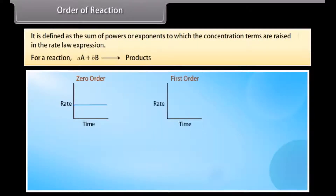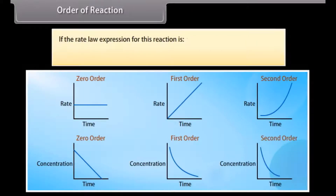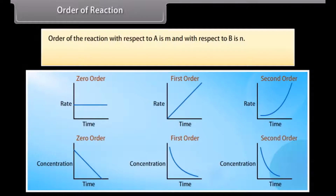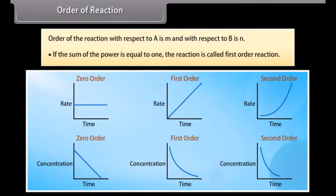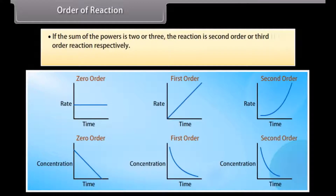Order of reaction. It is defined as the sum of powers or exponents to which the concentration terms are raised in the rate law expression. Rate = K[A]^m[B]^n. The order of this reaction equals m + n. Order with respect to A is m and with respect to B is n. If the sum of powers equals 1, the reaction is first order. If the sum is 2 or 3, the reaction is second or third order respectively. The order of a reaction can also be 0 or fractional.